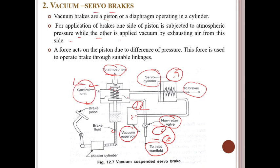The control unit also contains a piston to which valves are attached. The upper valve controls the connection between the atmosphere and the left side of the servo cylinder. The lower valve controls the connection between the vacuum reservoir and the lower side. The piston in the control unit is actuated by the brake pedal through the master cylinder as shown in the figure. The brake pedal movement is transferred to the master cylinder, which transfers it through brake fluid to operate the piston.